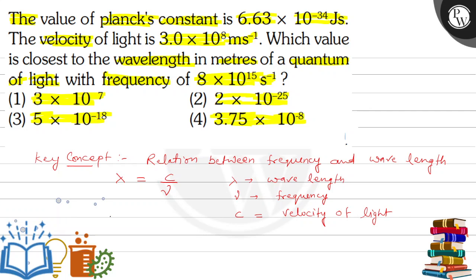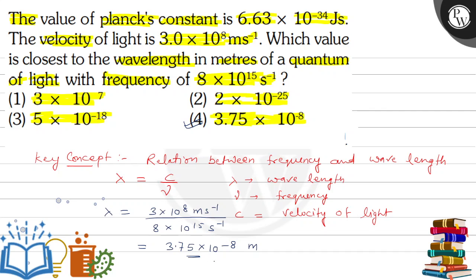Now put the values. Lambda equals c, which is 3.0 multiplied by 10 to the power 8 meters per second, divided by nu, which is 8 multiplied by 10 to the power 15 per second. Solving this, we get 3.75 multiplied by 10 to the power minus 8. This is the wavelength in meters of a quantum of light with frequency 8 multiplied by 10 to the power 15 per second.